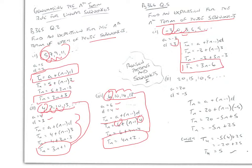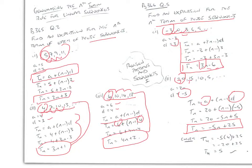We like to write our nth term rule in the form Tn = (something)n ± (number). The fourth sequence is 20, 15, 10, 5. Our first term is 20 but this time the difference is negative: −5. The difference can be positive or negative, a whole number or a decimal — it depends on the sequence. Plugging 20 in for a and −5 for d, being careful with the negative sign, we get Tn = −5n + 25. We check: T4 = −5(4) + 25 = 5, which matches the fourth term.